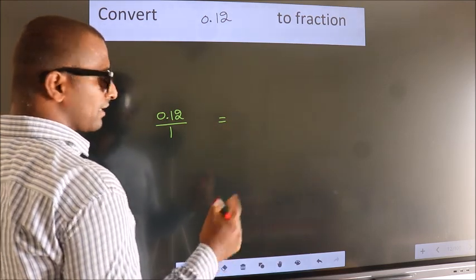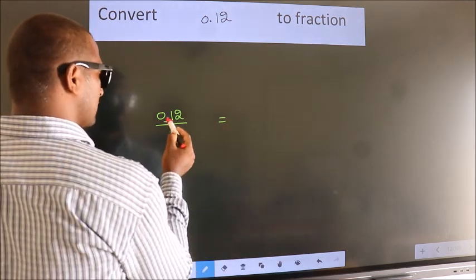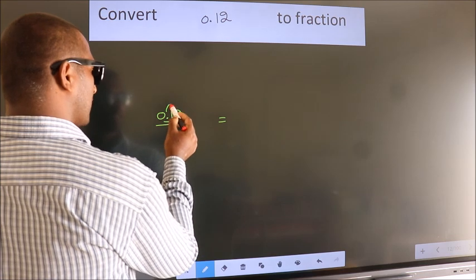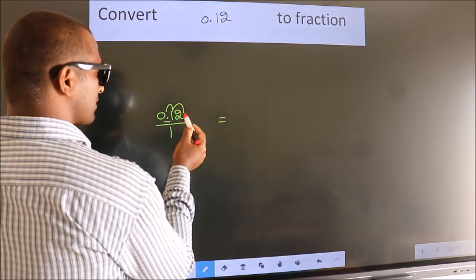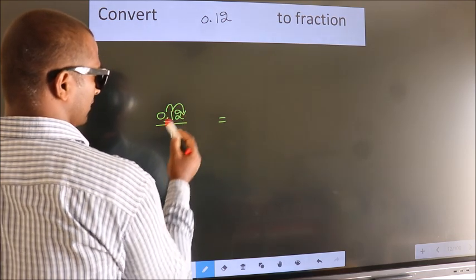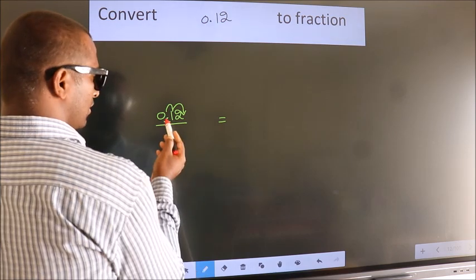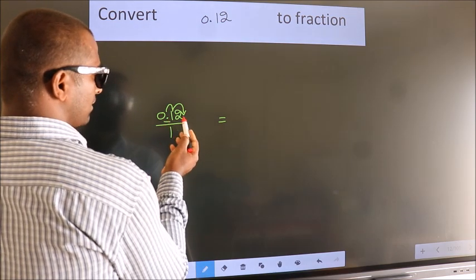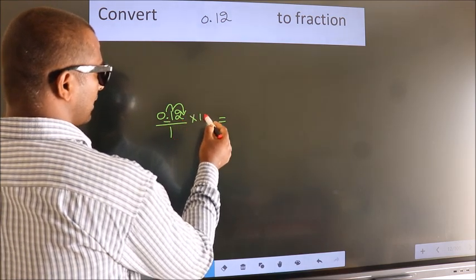For that to happen, we have to shift this decimal after 1, 2 numbers. Here. Now, to shift this decimal after 2 numbers, we have to multiply it with 100.